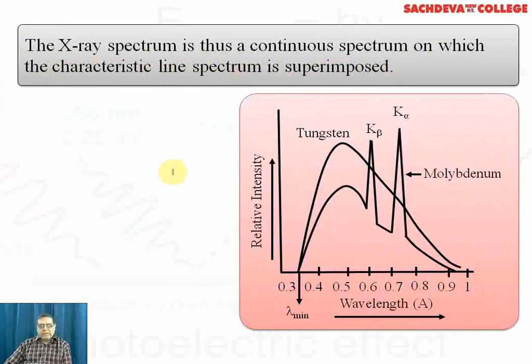The X-ray spectrum is the continuous spectrum on which the characteristic line spectrum is superimposed. In the figure, two peak values are indicated: one for the target as tungsten and other for molybdenum. The target must have high atomic weight. For tungsten target, the wavelengths vary from 0.3 to about 1 angstrom, and relative intensity of X-rays increases.